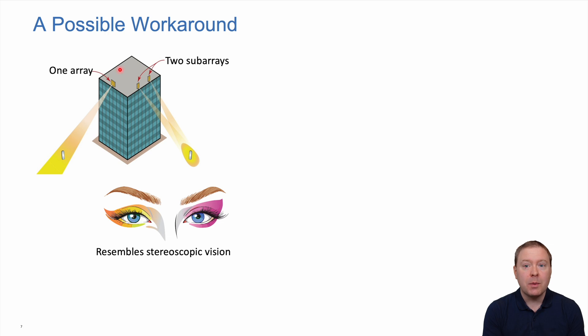A possible workaround is going from one array to multiple subarrays deployed at the same location. Operators can consider this because they're already used to deploying sector antennas at the same location. This resembles stereoscopic vision with two eyes—having two eyes lets us see depth information from observation, even with only two different panels.